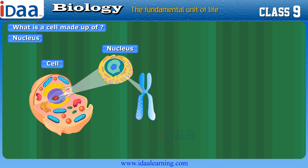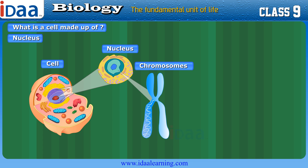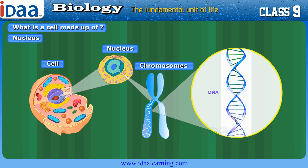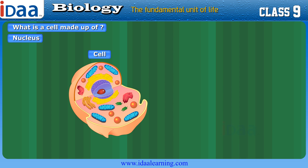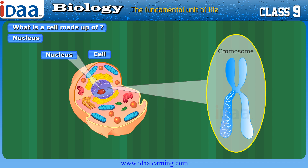The nucleus contains chromosomes. Chromosomes contain information for inheritance of features from parents to offspring in the form of DNA. In a cell which is not dividing, DNA is present as part of chromatin material. Chromatin material is observable as a knotted mass of thread-like structures. Whenever the cell is about to divide, the chromatin material gets organized into chromosomes.